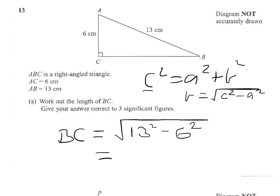That comes to 11.53. Now that three tells me that when I round to three significant figures, my answer will be 11.5.